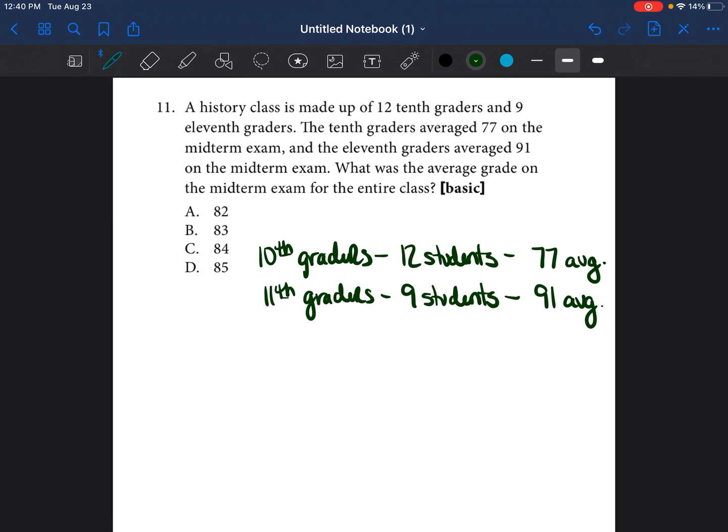So I already know the mistake that many students are going to make. A lot of students are going to say, oh, average. So I'm just going to take 77 plus 91, divide that by two and I'm going to get 84 and 84 is going to be my answer. That is a mistake. And I'm going to show you why that's a mistake.